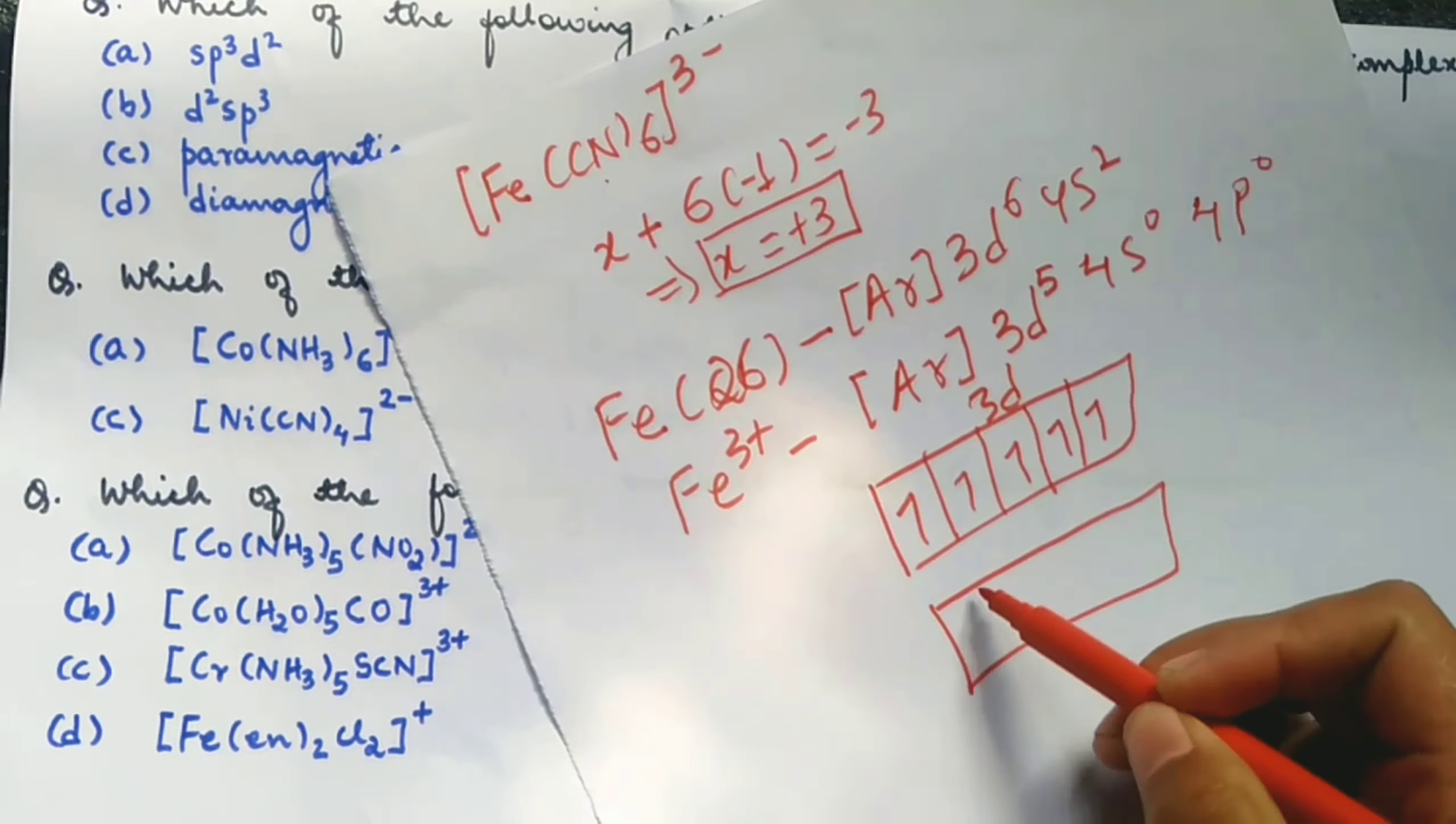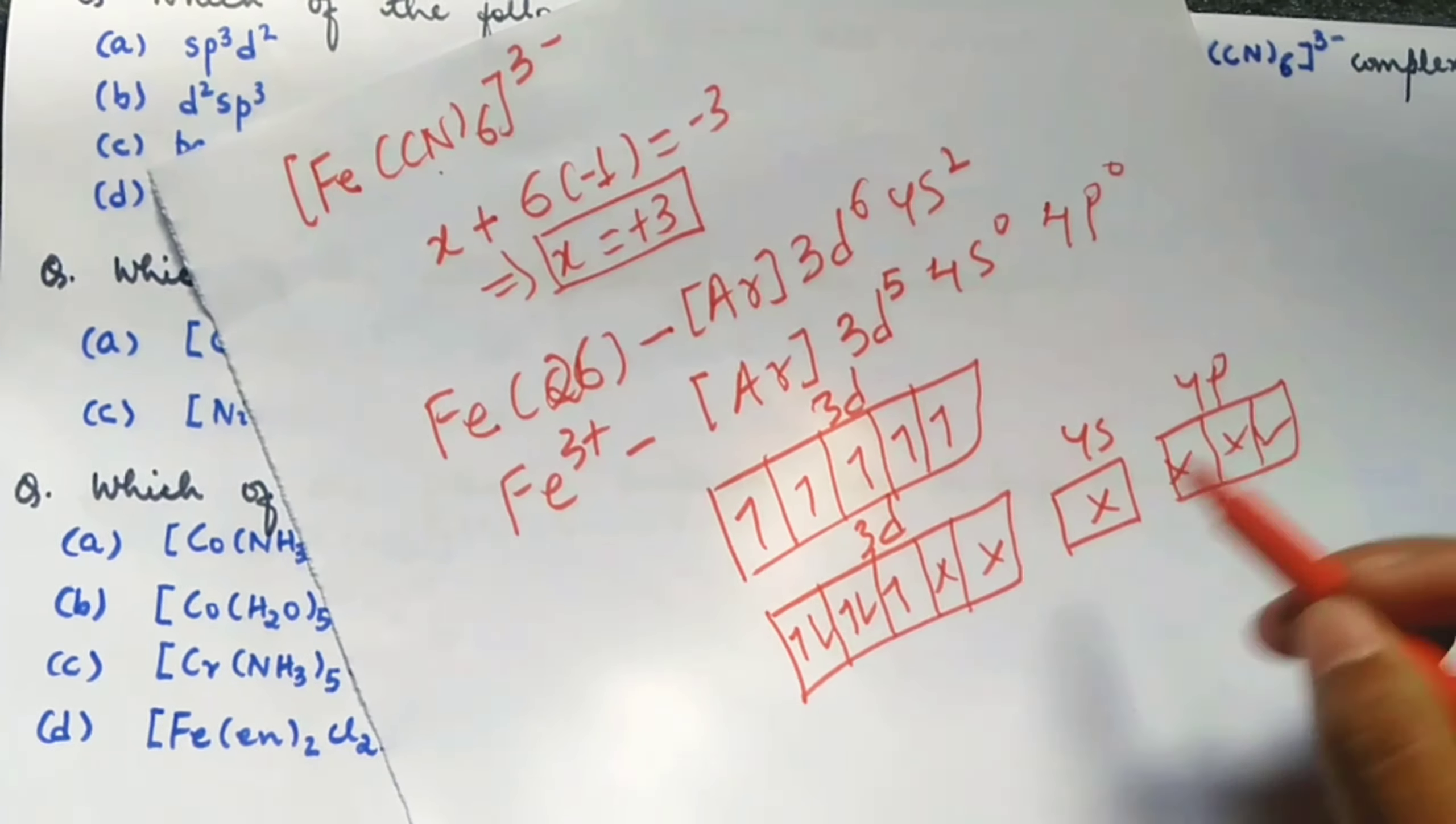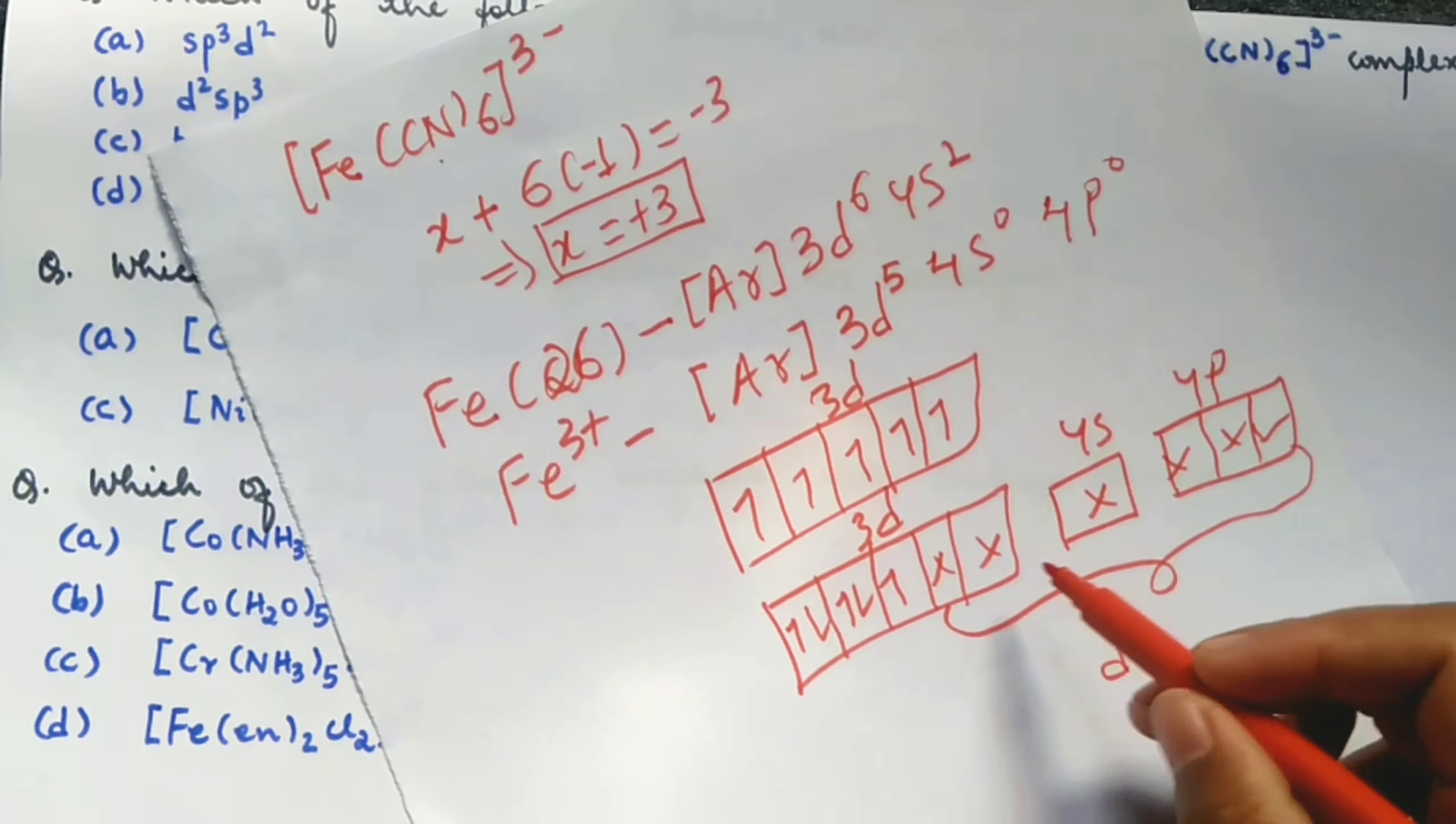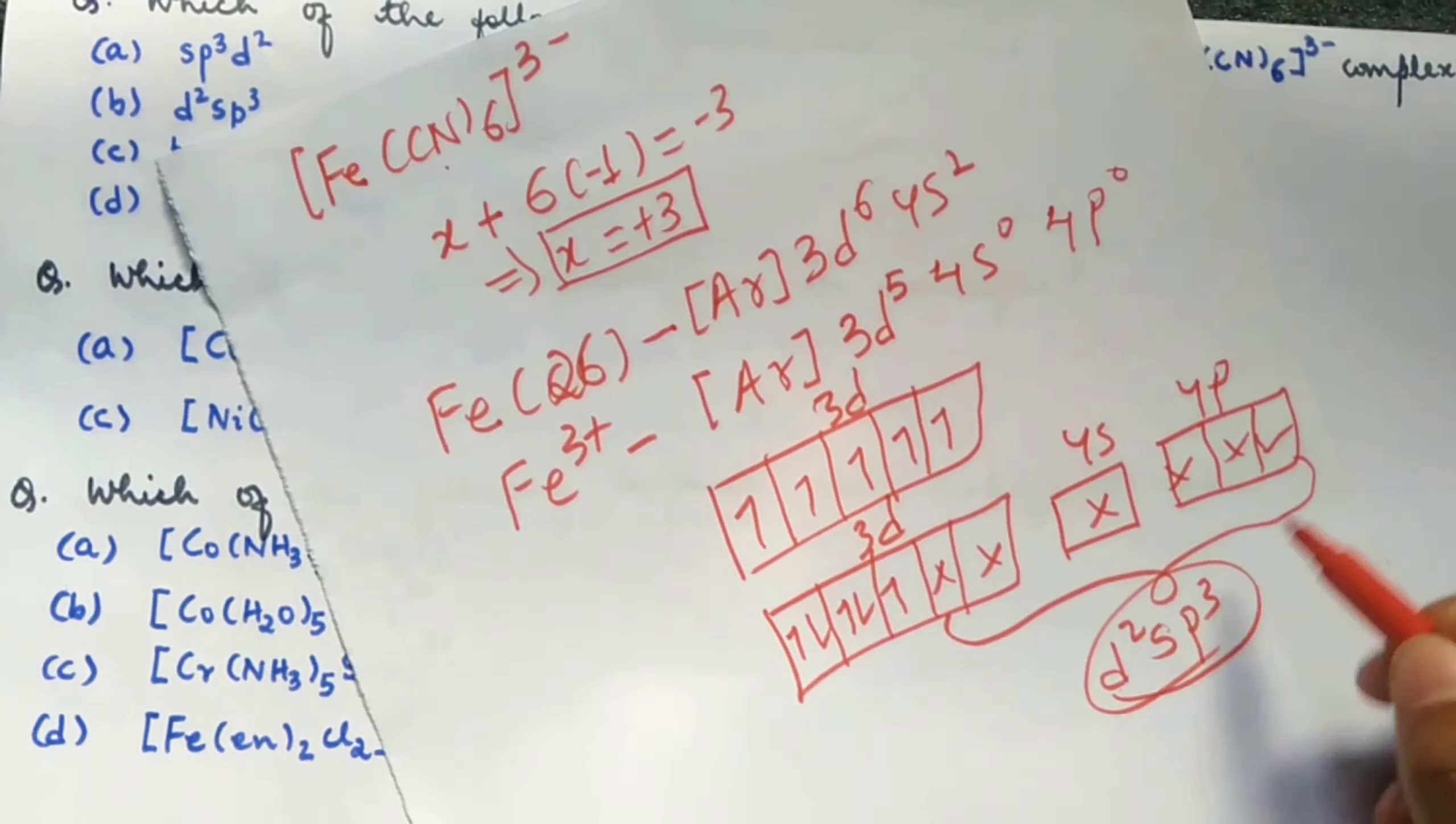Here we have 4s0, 4p3. There are 6 ligands, right? 1, 2, 3, 4, 5, 6. What is the hybridization? D2 and then 1s, 3p. D2sp3.